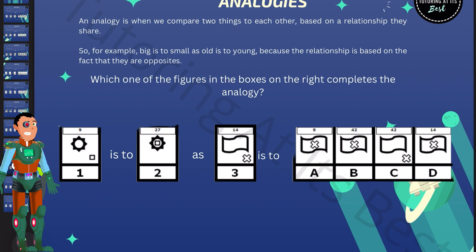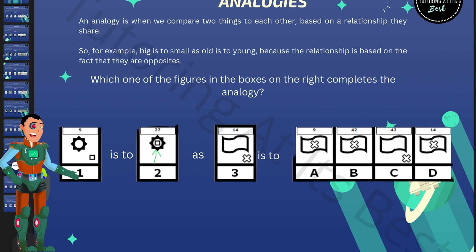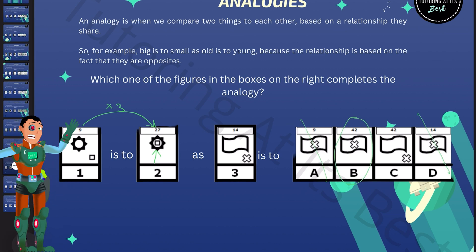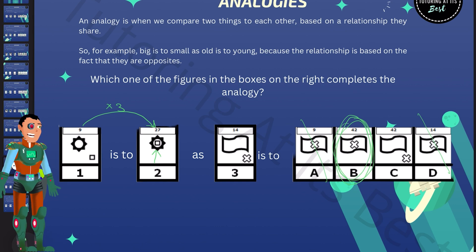So to get from figure one to figure two, we moved the square outside the star to inside the star. So you can see it's now pointing inside. Did you notice a change from the number nine to the number 27? So again, you can see how that works. And that was a change of multiplying it by three. So figure three, what does it become? Well, we know 14 times three is 42. So we can eliminate D and A. Well, we know the answer is going to be B because the cross has to be inside the flag.